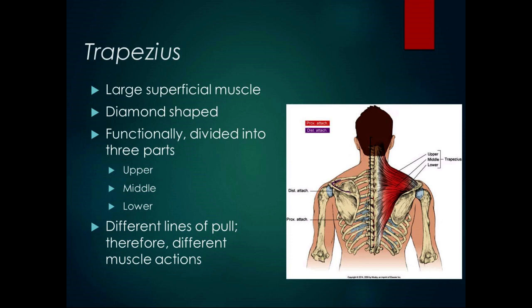The upper trapezius goes kind of medial to lateral and superior to inferior. The middle trapezius goes mostly medial to lateral, and the lower trapezius goes inferiorly and a little bit medial to lateral. They all have a line of pull and all help with scapular retraction. The upper trapezius can do elevation, the lower trapezius can do depression, and they both function in force couples for upward and downward rotation.